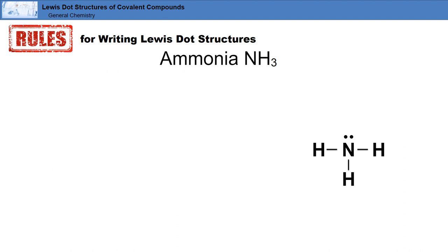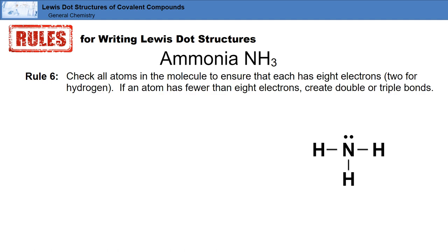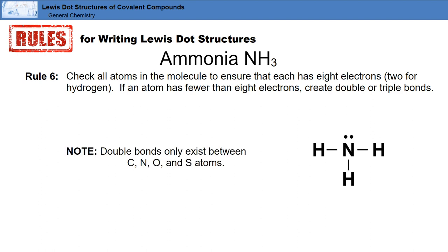Finally, we'll apply rule six, which states: check all atoms in the molecule to make sure each one has eight electrons, with the exception being hydrogen, which only requires two. If an atom has fewer than eight electrons, we'll need to create double or triple bonds. It's also important to point out that double bonds only exist between carbon, nitrogen, oxygen, and sulfur.